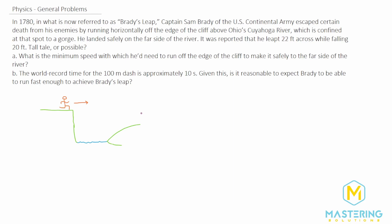They want to know: is this even possible? For part A, we need to figure out what is the minimum speed he would need to run to make it across this distance. The distance he's jumping is 22 feet and he's falling 20 feet. Let's convert this into standard units — we have it in feet but we need it in meters.